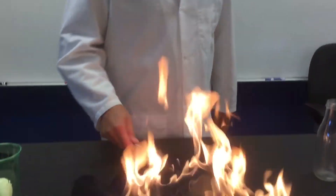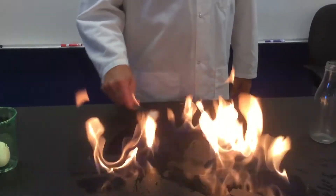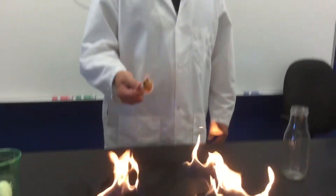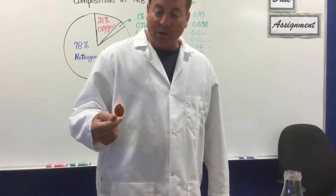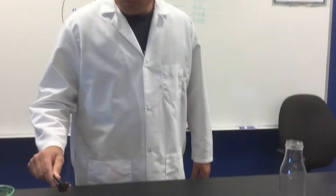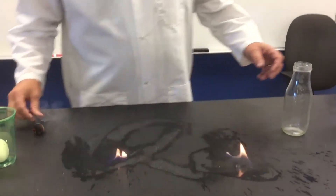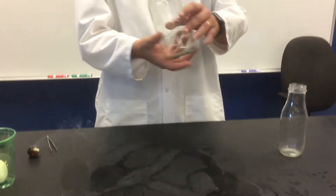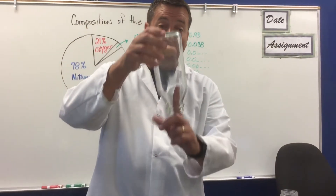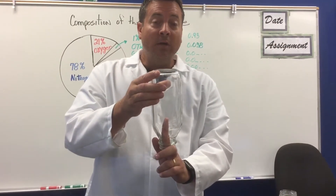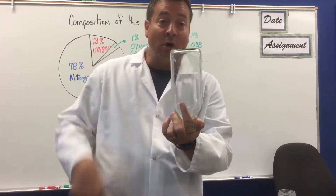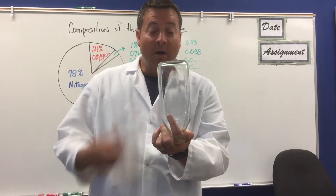From our previous experiment we learned that in the presence of oxygen things will burn. If there is no oxygen, then there is no fire. We learned that by taking a candle, burning it, and inverting a jar over it — the candle keeps burning as long as there is oxygen present. When the oxygen was all used up inside the jar, the candle went out.